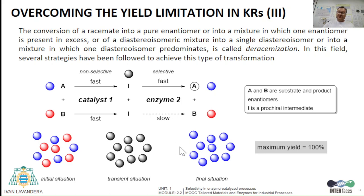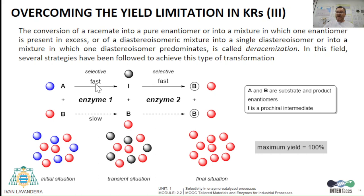On the other hand, we can also perform deracimization of a racemic substrate if we combine a selective transformation that forms an intermediate I — in this case from enantiomer A — plus non-reactive enantiomer B, and a second enzymatic reaction that can selectively give back substrate enantiomer B, thus finally obtaining up to 100% of this enantiomer.